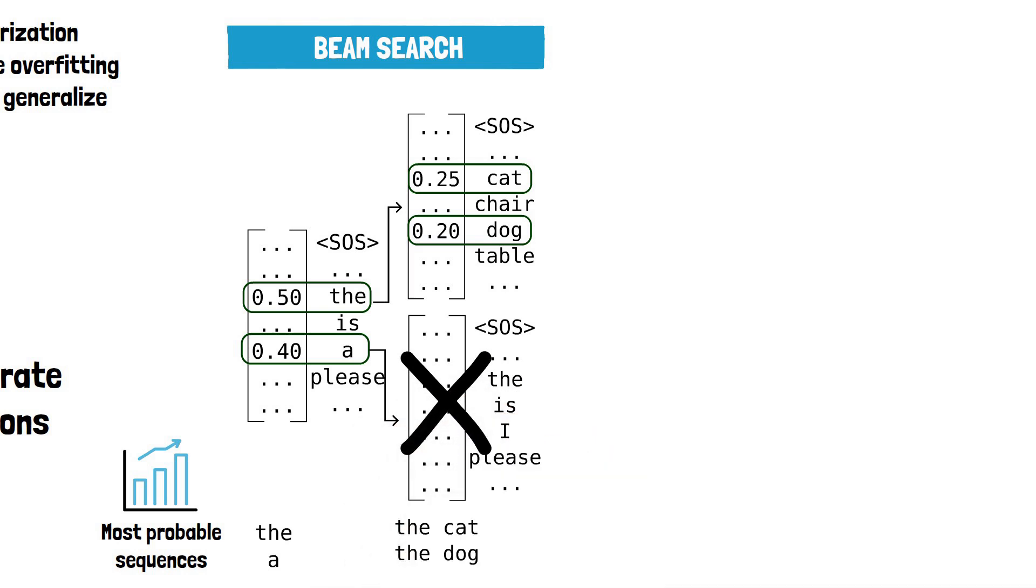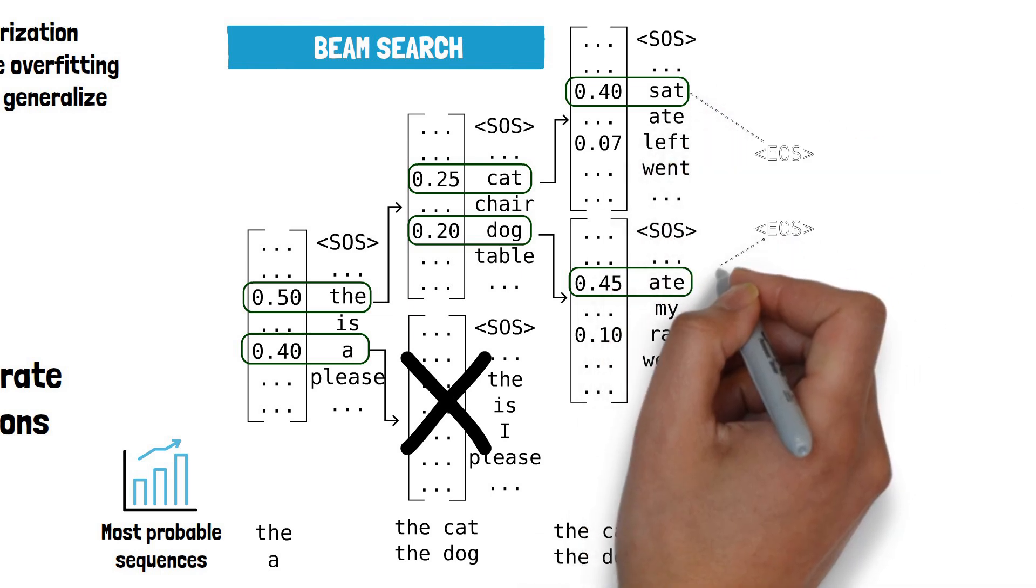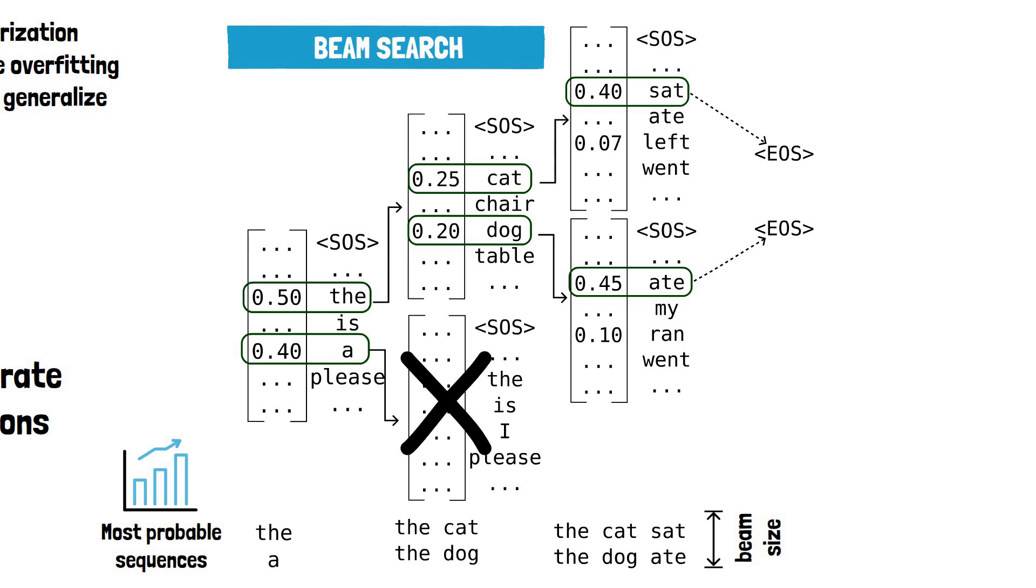The number of sequences we keep at each step is called the beam, which we extend one token at a time, only keeping the most promising ones until we reach an end of sequence token. By considering a wider range of possibilities, beam search can often find better translations than the greedy method.